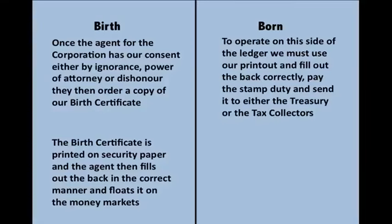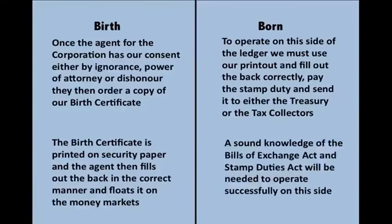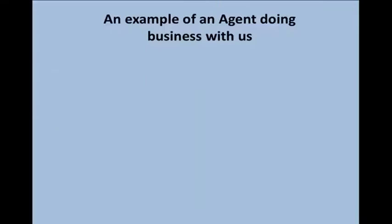On the private side, to operate on this side of the ledger, we must use our printout and fill out the back correctly, pay the stamp duty, and send it to either the Treasury or the tax collectors. Each country has their own — in America it's the IRS, in New Zealand it's the IRD, and in Australia it's the Australian Tax Office. To operate on this side, you're going to need a sound knowledge of the Bills of Exchange Act and the Stamp Duties Act.